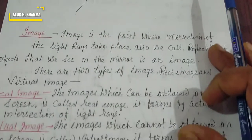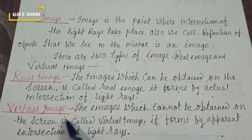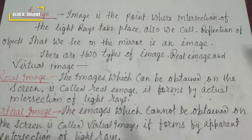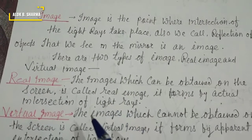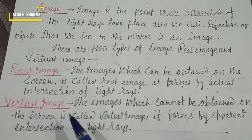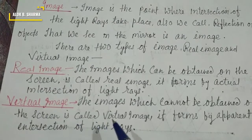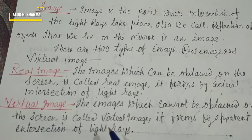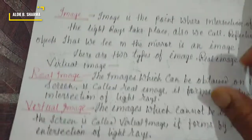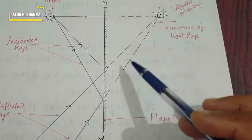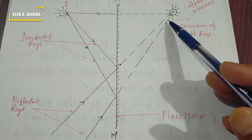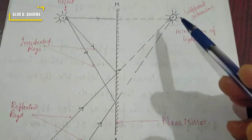Images are of two types: real image and virtual image. A real image is the result of actual intersection of light rays, and it can be obtained on a screen. A virtual image is formed when there is apparent or virtual intersection of light rays, and it cannot be obtained on a screen. In this diagram, since the rays do not actually intersect — only appear to intersect — this is a virtual image.